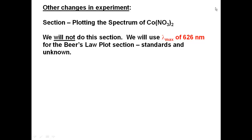Other changes to the experiment: the section on plotting the spectrum of cobalt nitrate will not be done. We will use a lambda max of 626 nanometers — set the spec 20 to 626 nm for the Beer's Law plot and for standards and unknowns. As a check while doing the experiment: since the concentration of the 1 mL sample versus the 3 mL sample is a factor of three, the absorbance should triple. The 1 mL versus 5 mL absorbance should be five times. If this isn't happening, something may be wrong.